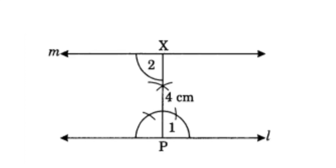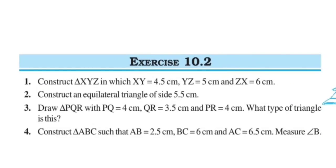Then draw a perpendicular line at P. Now open the compass to 4 centimeters and from point P cut one arc of 4 centimeters, and name it X. So PX is equal to 4 centimeters. Now draw angle 1 equal to angle 2, meaning a 90 degree angle at X, and produce the line to both sides. So M is the required line parallel to L through X. Exercise 10.1 is now completed.